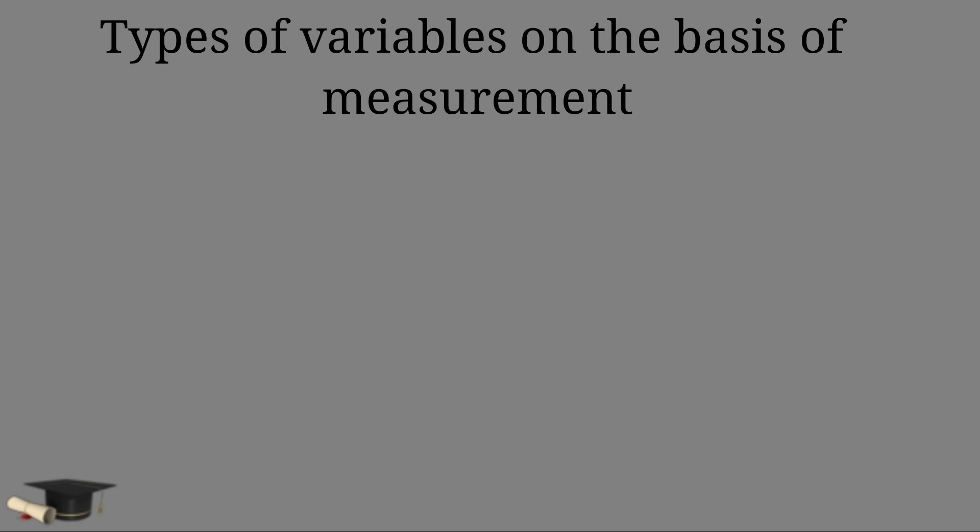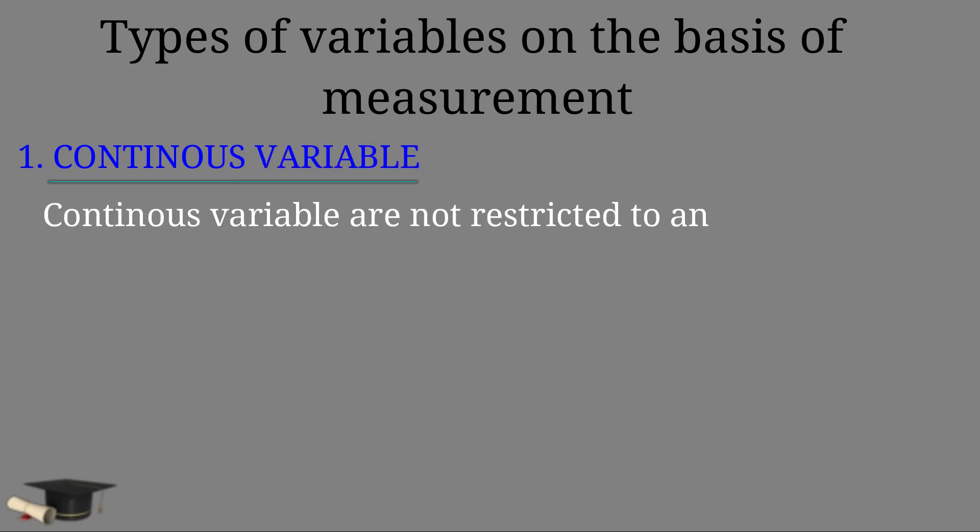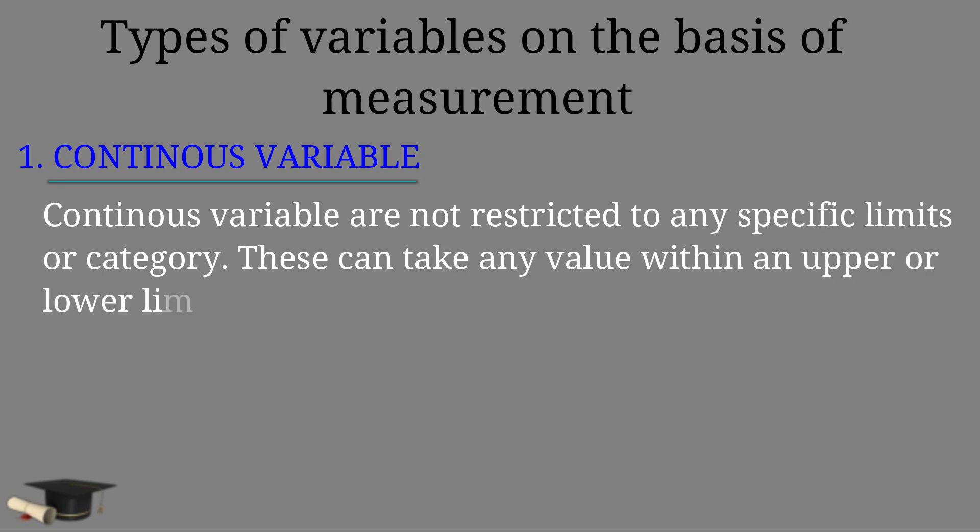Now, types of variables on the basis of measurement. On the basis of measurement, as we said earlier, variables are of two types. Number one, continuous variable. Continuous variables are not restricted to any specific limits or category. These can take any value within an upper or lower limit. For example, age in years, height in inches, salary in dollars.